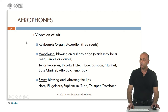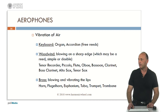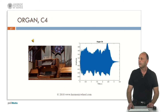Now let's analyze the aerophones. In this case the sound is produced by the vibration of air. They can be keyboard instruments such as the organ or the accordion, woodwind or brass instruments. In the woodwind instruments, the sound is produced by blowing on a sharp edge, which may be a reed, either simple or double. And in the case of brass instruments, the sound is produced by blowing and vibrating the lips.